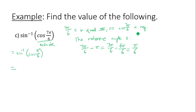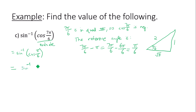Cosine of pi over six: we have a 30-degree angle, the opposite side is one, the bottom side is square root of three, and the hypotenuse is two. Cosine of pi over six is adjacent over hypotenuse — square root of three over two. And it has to be negative, because the original angle was in quadrant three, so we do need a negative answer: negative square root of three over two.